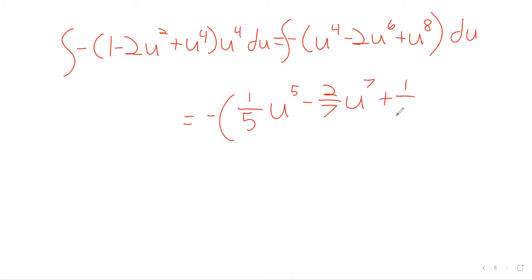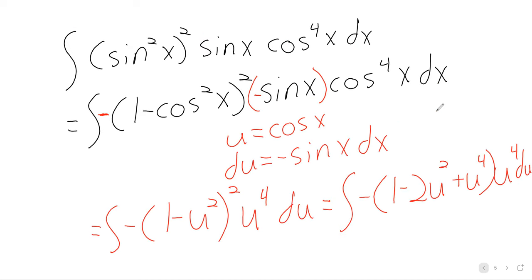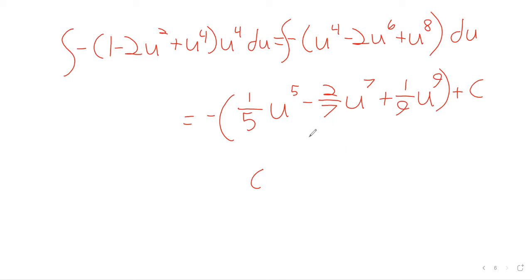Integrating term by term and adding the constant of integration, then substituting u equals cosine of x back in, we end up with this polynomial-looking expression, except that instead of a variable raised to powers, it's cosine of x raised to powers.